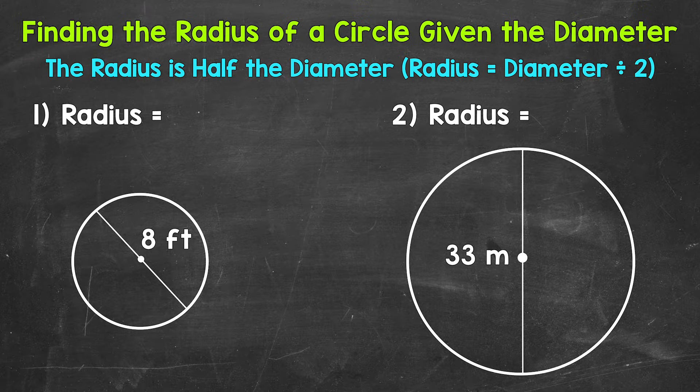Now the diameter of a circle is a line segment that connects two points on a circle and it has to go through the center. So a diameter goes all the way across a circle and cuts or divides a circle in half, so two equal pieces.